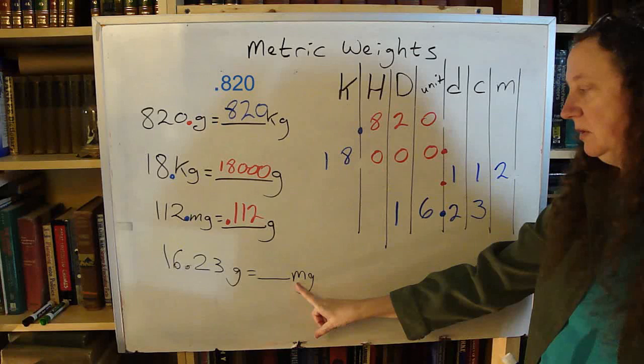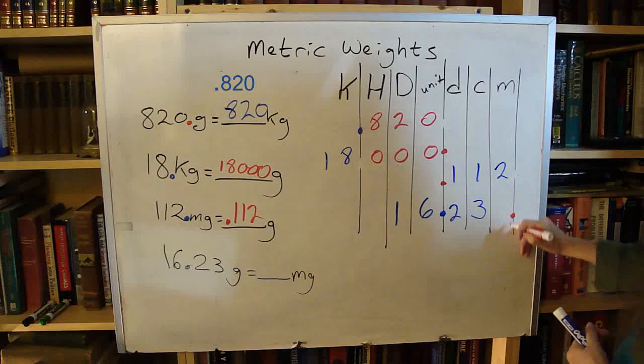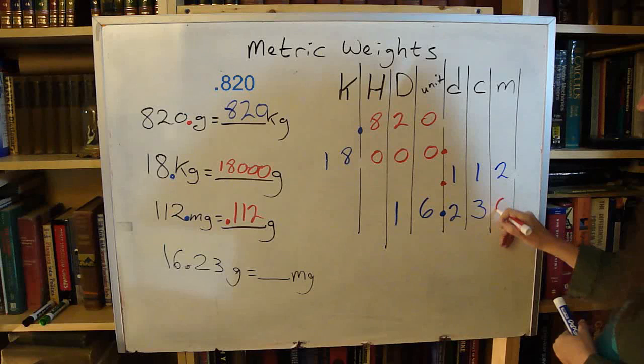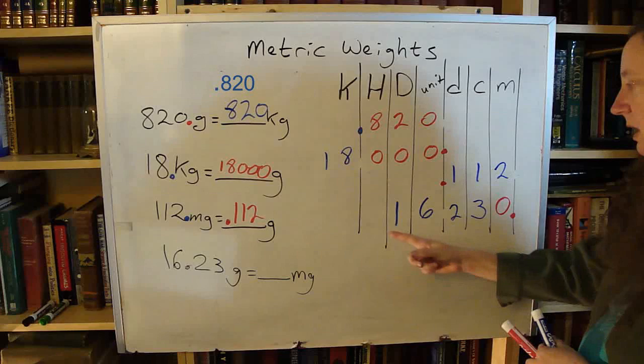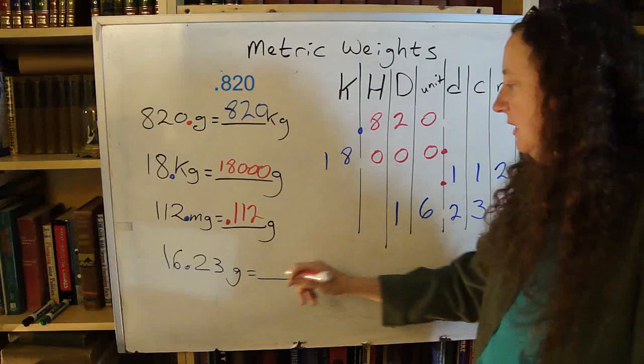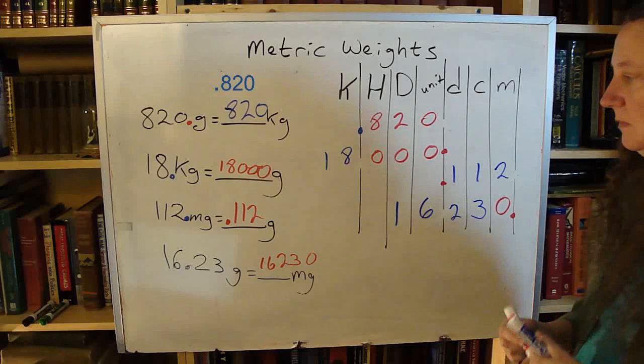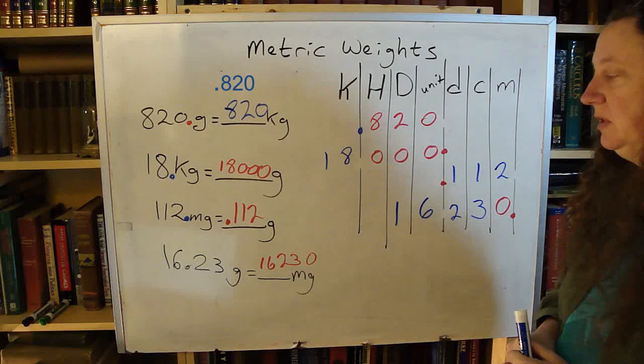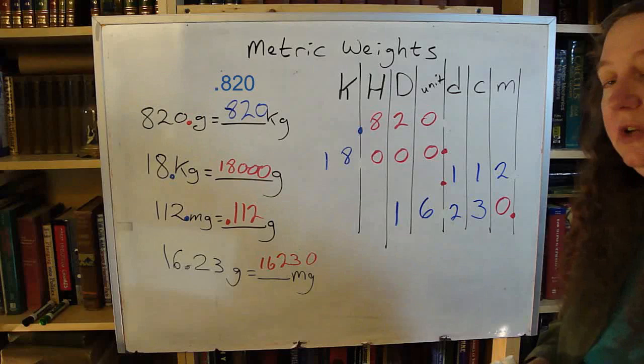I want my new decimal point to be at the end of the milli column. There is my milli, follow that down. There is my new decimal point. I have a blank space here, so I need to fill it in with a zero to hold that decimal in place. I need to get rid of my old decimal. I now have my answer: 16,230. So 16.23 grams is equal to 16,230 milligrams. Converting in the metric system is as easy as moving your decimal point.